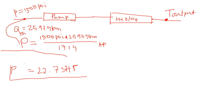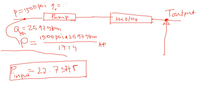That 22.73 hp is the pump input power. Now, to calculate the power output at the motor shaft, we have to account for all losses. The pump has two efficiency losses: volumetric efficiency of 85% and mechanical efficiency of 90%.